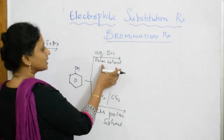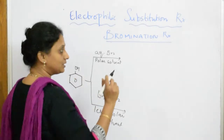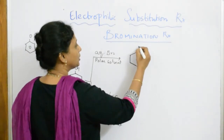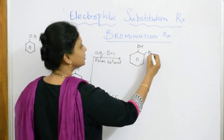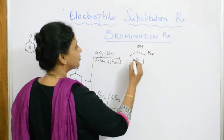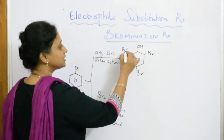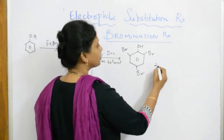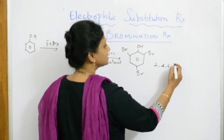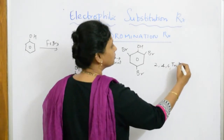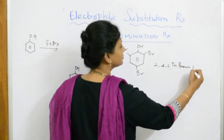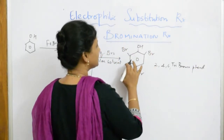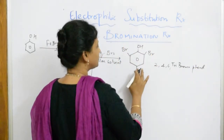Whenever you see aqueous polar solvent, remember: the product you get from phenol is 2,4,6-tribromophenol. The positions 2, 4, and 6 all get brominated. That is the product you get with aqueous bromine.